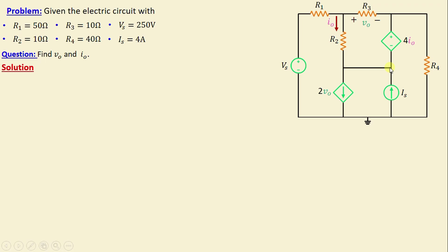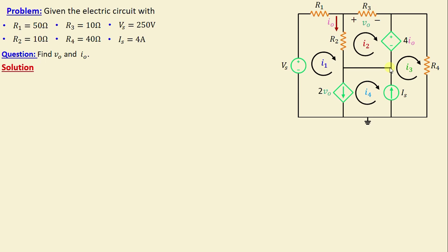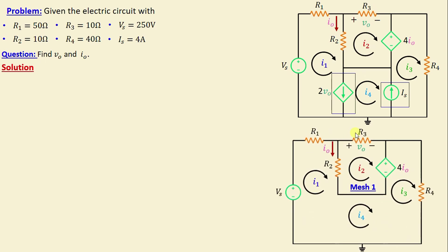Now let's proceed to assign the mesh currents. I1 is the current in mesh 1, I2 is the current in mesh 2, I3 is the current in mesh 3, and I4 is the current in mesh 4. All mesh currents are chosen in the clockwise direction. After the assignment of mesh currents, we need to remove the two branches containing the independent source IS and the dependent source 2VO to obtain our super mesh.